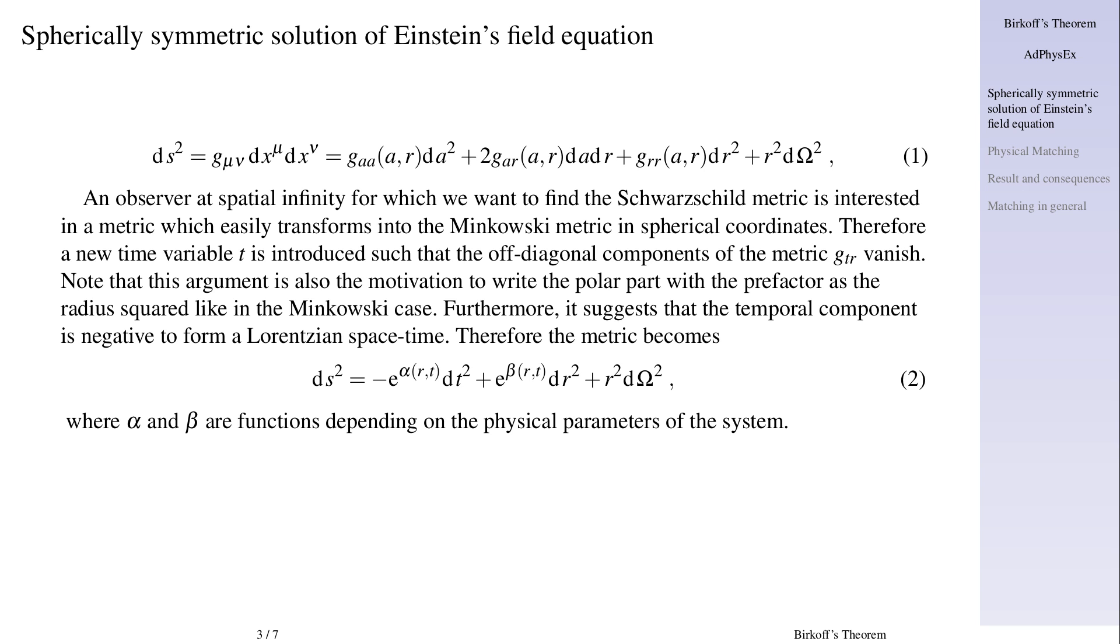Furthermore, it suggests that the temporal component is negative to form a Lorentzian space-time. Therefore the metric becomes ds squared equals minus exponential of alpha dt squared plus exponential of beta dr squared plus r squared d omega squared, where alpha and beta are functions depending on the physical parameters of the system.